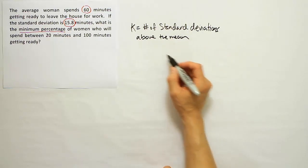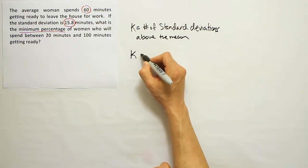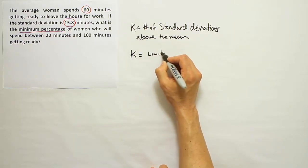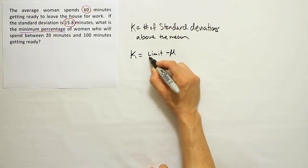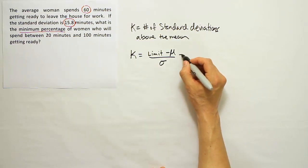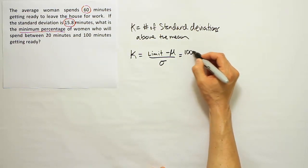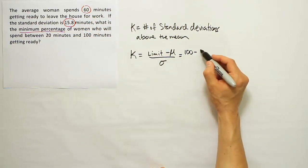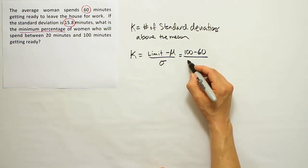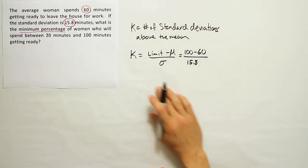Above or below the mean, actually. So to do that, we're going to say k is equal to the limit minus the mean over sigma. And this limit here, I'm going to use the upper limit. That upper limit will be 100.